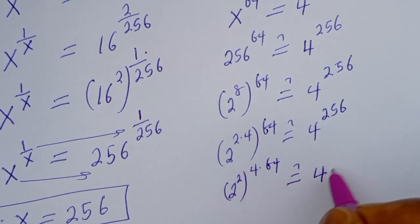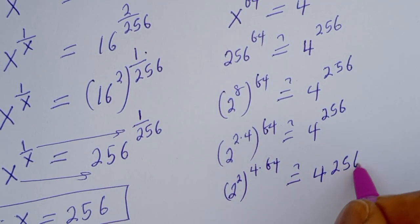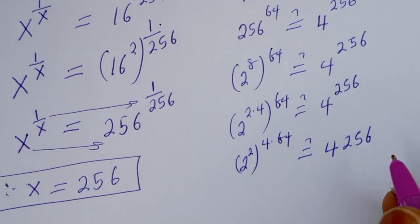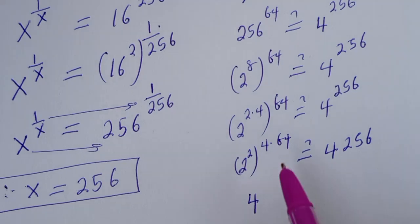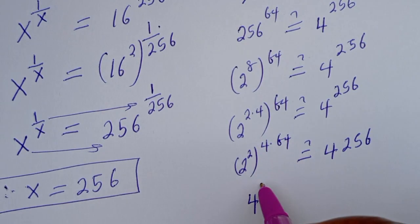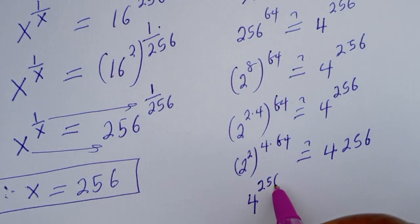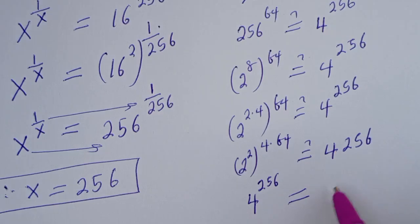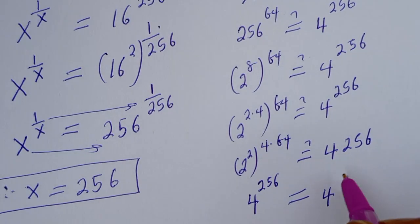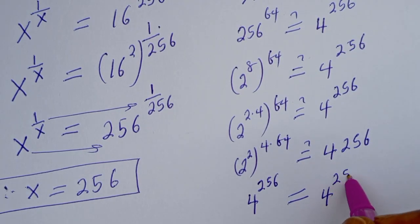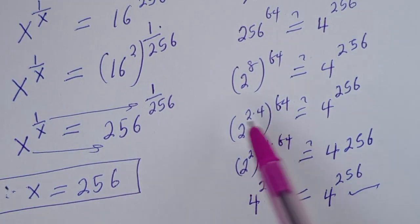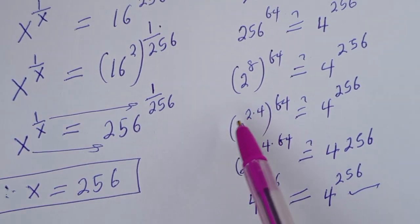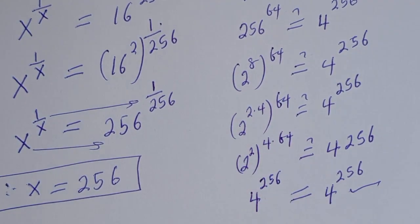This can be written as 2 squared to the power of 4 times 64, which must equal 4 to the power of 256. So 4 to the power of 4 times 64, that is 256, is equal to 4 to the power of 256, which is true. So s equals 256. I hope you enjoyed the video. Thank you for watching. Please don't forget to like, share, comment, and subscribe to my channel. Bye bye!